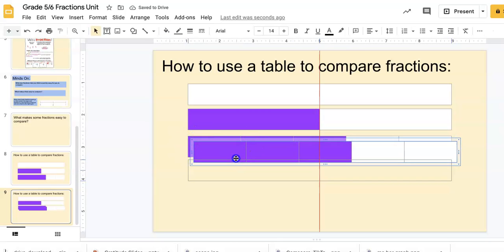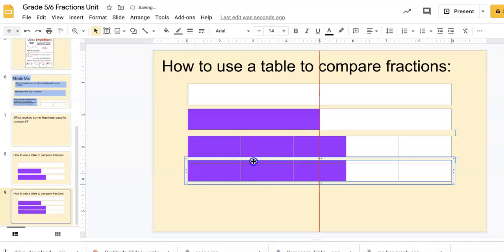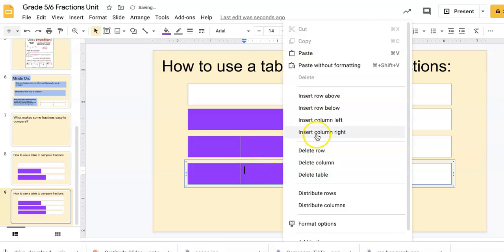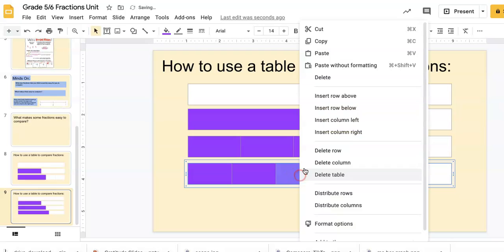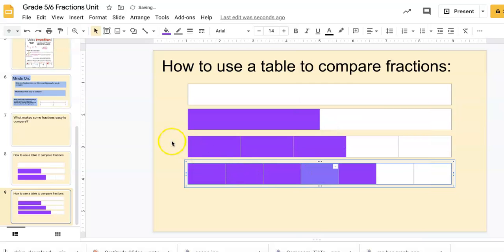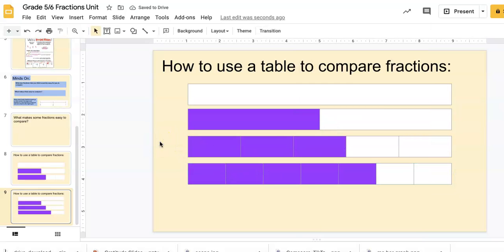You can do this for any denominator you want. Copy and paste it—maybe I want this to be in sevenths, so I just keep inserting until I've got as many parts of the whole as I want.